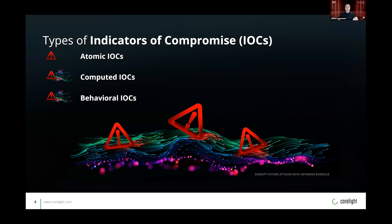The third type is behavioral indicators. These are the most complicated in that they may include a combination of zero or more atomic or computed indicators. This type of indicator is related to behavior or TTPs and requires Zeek scripts, Suricata rules, or similar methods to identify them.